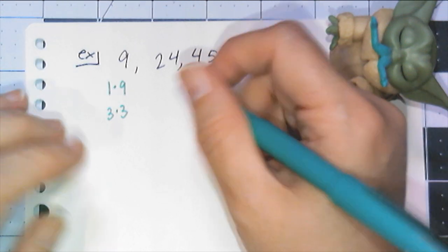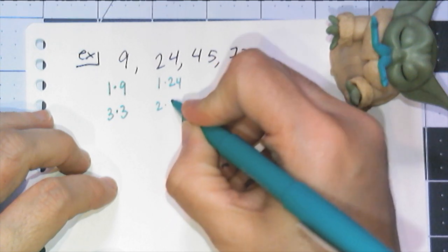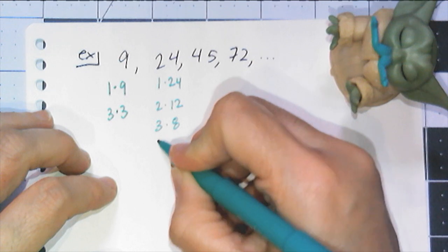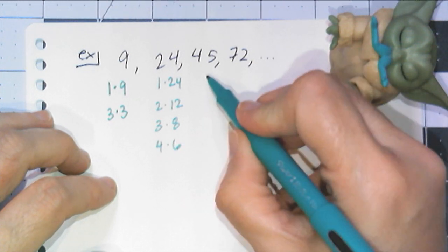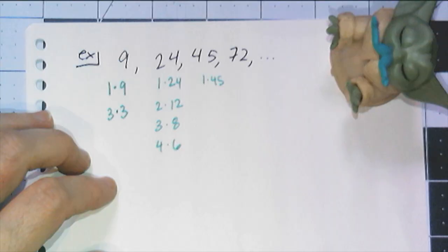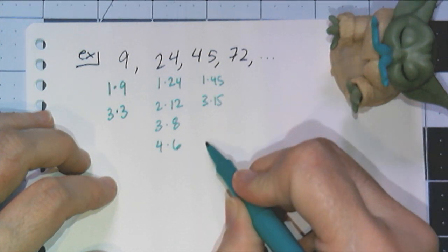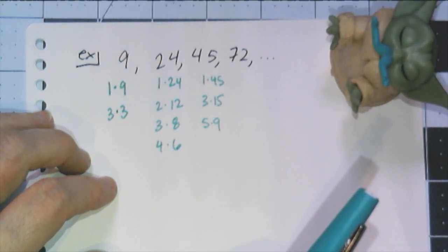And 24 has quite a bit more. So I have a 1 by 24, a 2 by 12, a 3 by 8, or a 4 by 6. And then 45 can either be a 1 by 45. 2 does not go into 45 so I can skip 2. 3, 15, 4 doesn't, 5 by 9, and that's it.